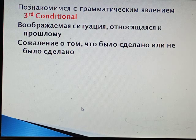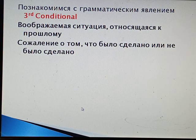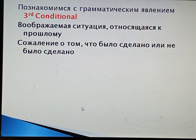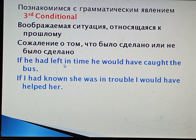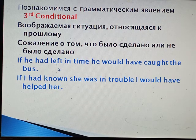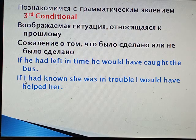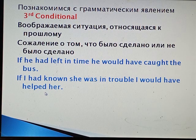А теперь мы смотрим с вами на третье условное. Что это такое? Это воображаемая ситуация, относящаяся к прошлому. Когда мы говорим, что в прошлом надо было поступить по-другому, не так, как мы сделали. Также это сожаление о том, что было или не было сделано. Например: если бы он вышел вовремя, он бы успел на автобус, но он не вышел вовремя и, соответственно, на автобус опоздал. If I had known she was in trouble, I would have helped her. Знал бы, что она в беде, обязательно бы помог. Но я не знал и поэтому не помог.